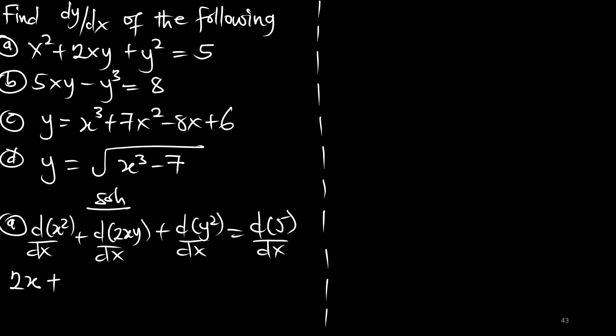With the product rule, we hold one function and differentiate the other. First, we put 2y and differentiate x, which gives 1. Then we hold x and differentiate 2y, which gives 2, but since we are differentiating y, that will have another dy/dx.